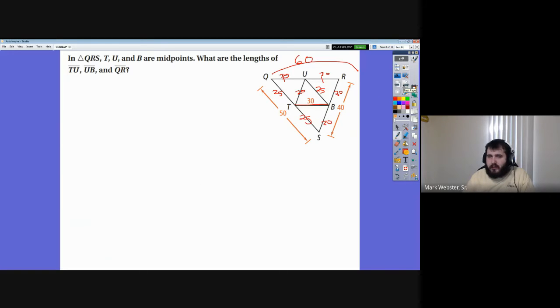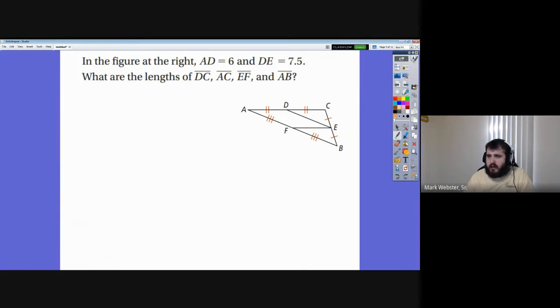All right, take two minutes. Give this one a try. See if you can figure it out. Same idea, exact same concept, slightly different letters. Okay, so, and again, it really does make a difference to take the time and label everything. They tell you that AD is 6. They tell you that DE is 7.5. So I want to know what these are. Well, let me fill out the information that I can fill out immediately. AD is 6, so that means DC is also going to be 6, and EF is also going to be 6. DE is 7.5. That means that AF is 7.5, and FB is 7.5.